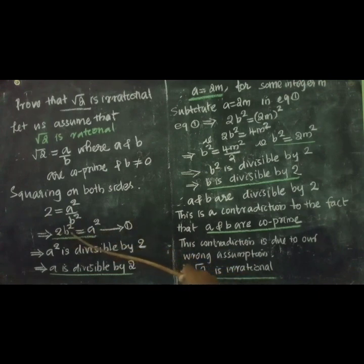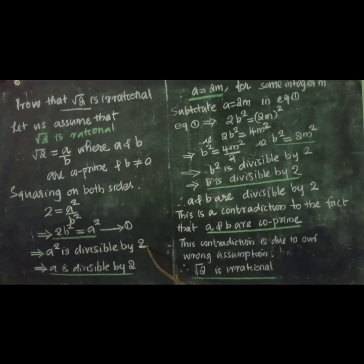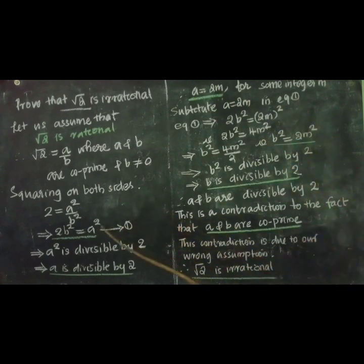From equation 1, 2b squared equals a squared. That means a squared is a multiple of 2, so we can say a squared is divisible by 2. If a squared is divisible by 2, we can say a is divisible by 2, because of theorem 1.3 we discussed. So if a is divisible by 2, we can write a equal to 2m. Any number divisible by 2 can be written in the form 2m for some integer m.